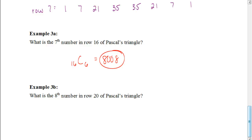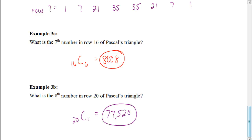Why don't you try to find the 8th number in row 20? Pause the video and hit play when you're ready to check your answer. You should have taken 20 choose 7, which gives you 77,520. That is how we can use Pascal's Triangle and combinations together to find different values. Good luck as you work on your assignment.